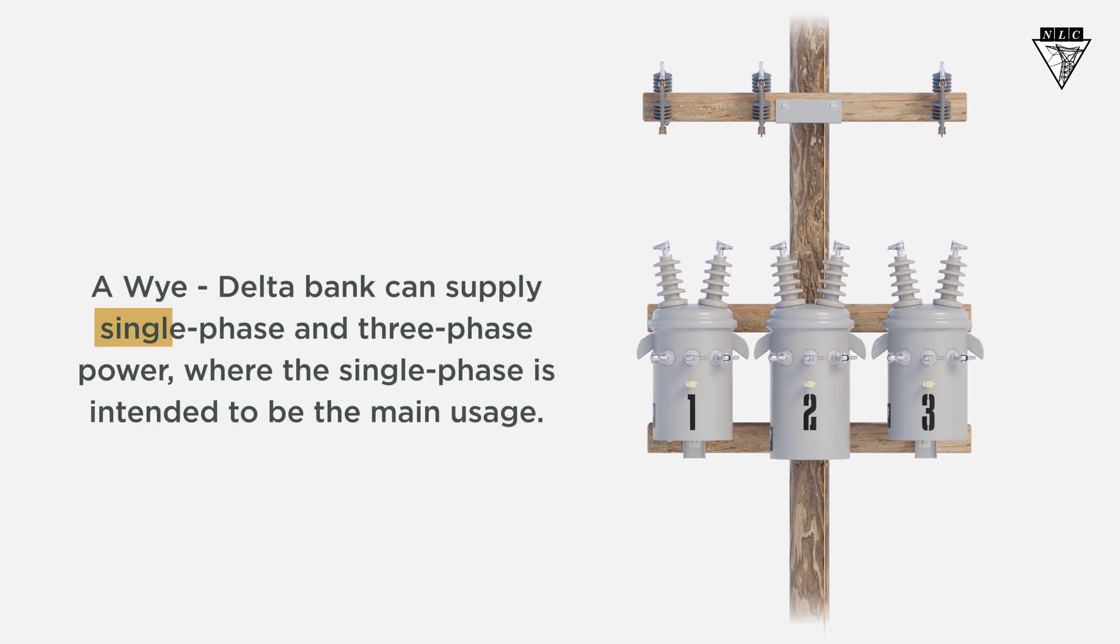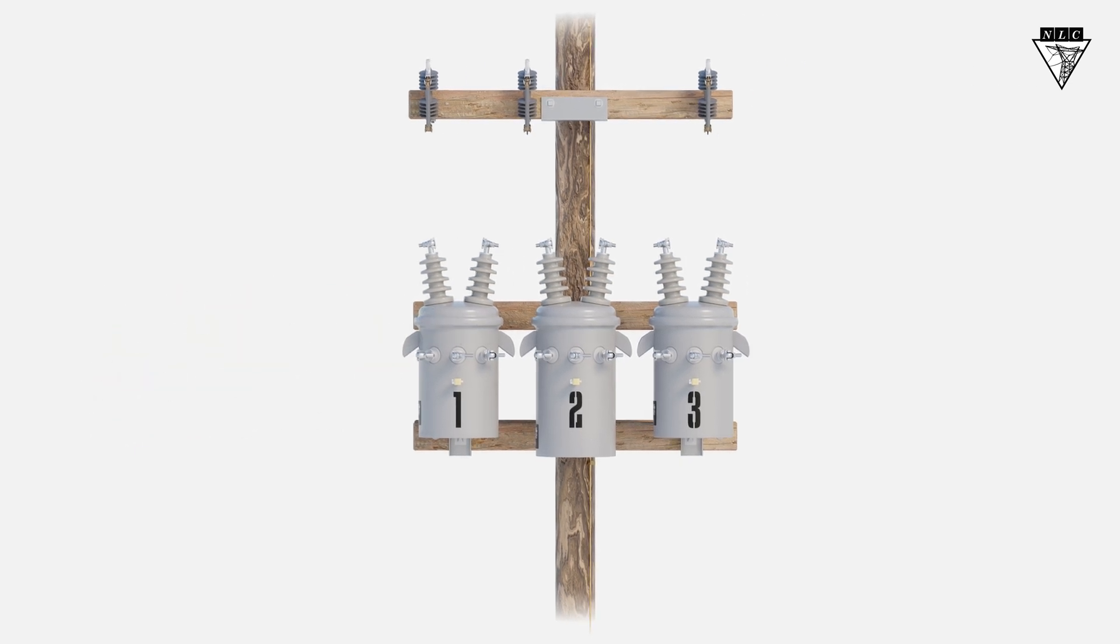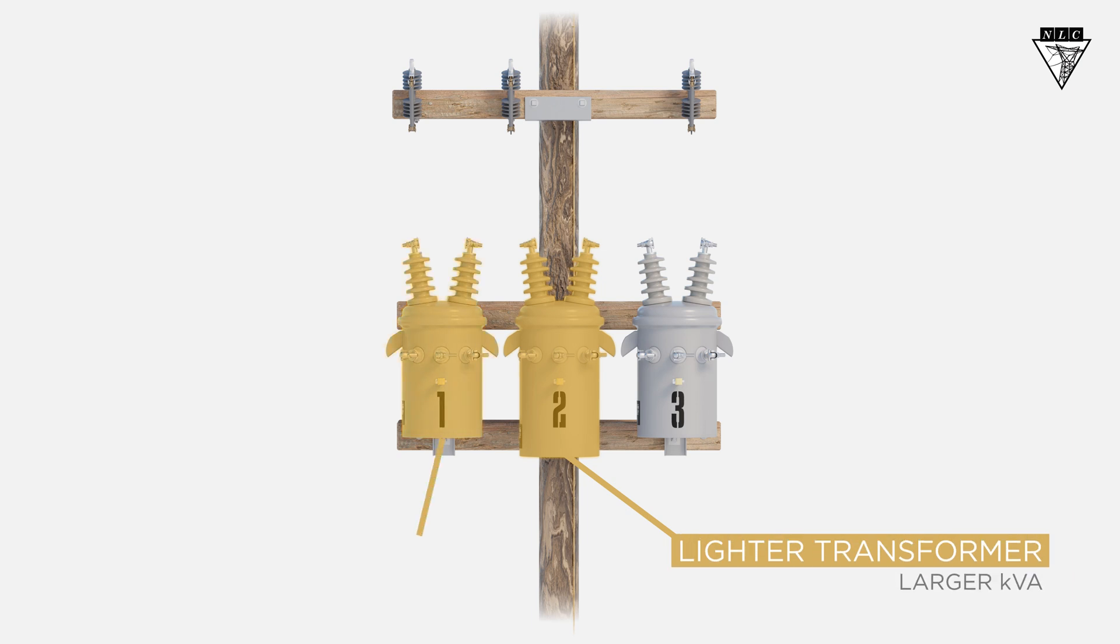A wide delta bank can supply single-phase and three-phase power, where the single phase is intended to be the main usage. This means it requires a lighter transformer and a power transformer.